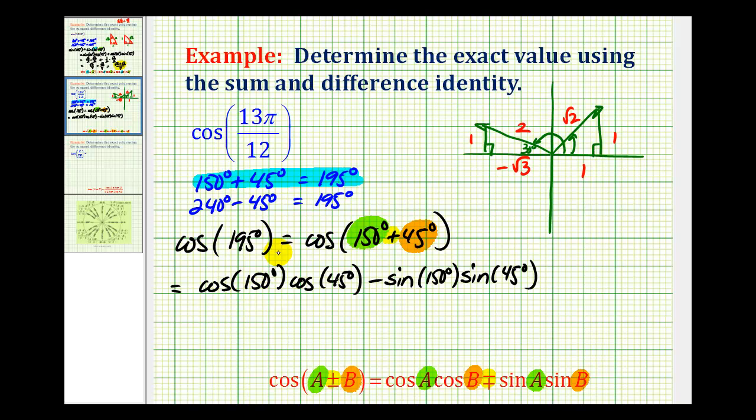Okay, so the cosine of 150 degrees would be negative square root 3 over 2. Cosine 45 degrees would be 1 divided by square root 2, and if you rationalize that, it would be square root 2 over 2, minus the sine of 150 degrees would be 1 half. And the sine of 45 degrees equals the cosine of 45 degrees because of the isosceles triangle, so this would be square root 2 over 2.